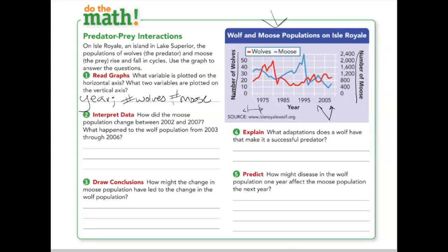Question two asks how the moose population changed between 2002 and 2007, and what happened to the wolf population between 2003 and 2006. Looking at the graph, the moose line (blue) went down between 2002 and 2007, so the moose population decreased. At the same time, the wolf line (red) went up between 2003 and 2006, so the wolf population increased.